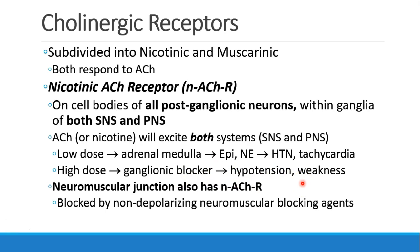The other place that you will see nicotinic acetylcholine receptors is in the neuromuscular junction, which we've already talked about. And we know that non-depolarizing neuromuscular blocking agents work at that receptor.